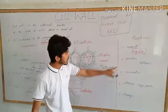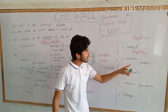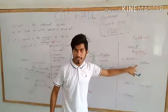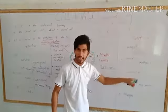The second function is protection. The cell wall protects the cell from pathogens, meaning bacteria and viruses.